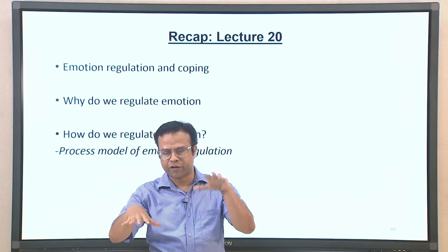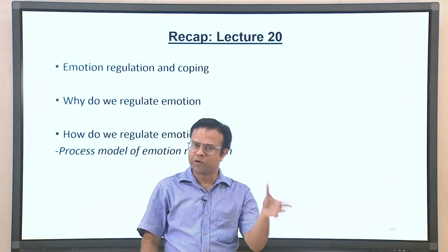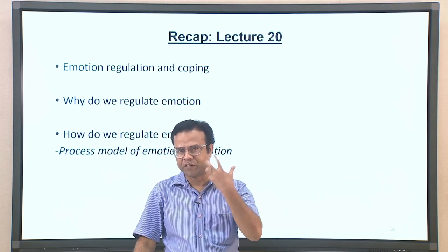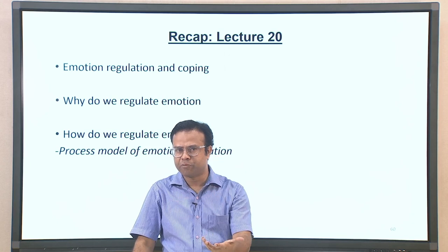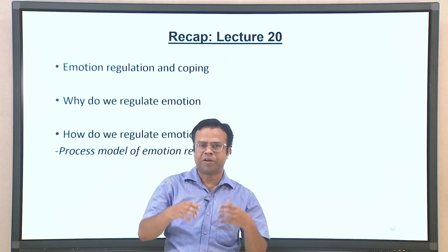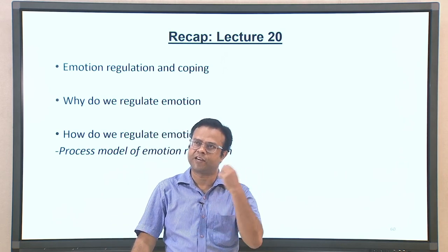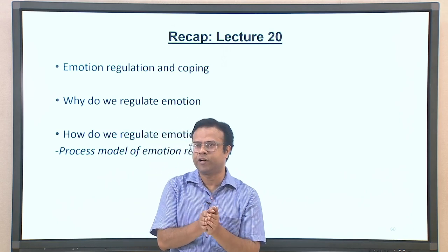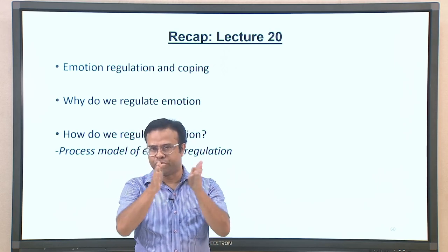We discussed introductory concepts and why we regulate emotions — the motivations behind it. There could be hedonic reasons, instrumental reasons to accomplish a specific task, reasons related to impression management, or pro-social reasons to fit with social norms. We also discussed how we regulate emotions, what the different strategies and steps involved in the emotion regulation process are, and we covered the process model of emotion regulation and the strategies involved in each of its processes.